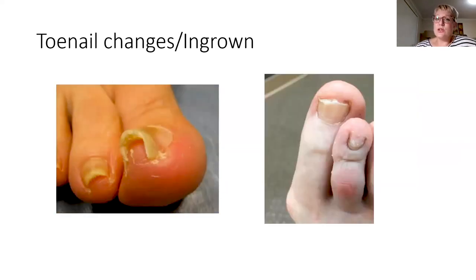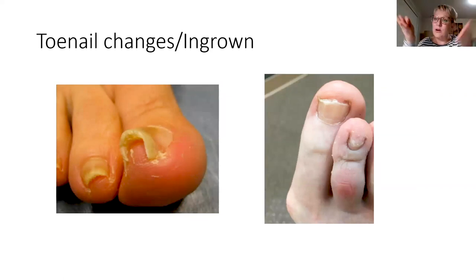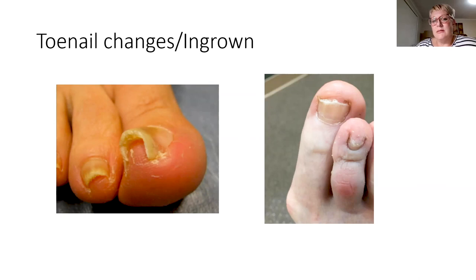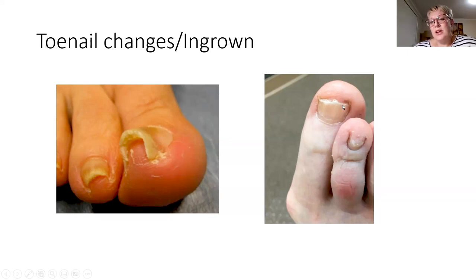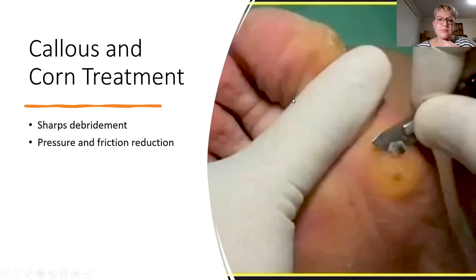Bunions can also cause toenail changes over time. With abnormal pressures going through other parts of the foot, you can get nail thickening, nails becoming meager or involuted, or ingrown nails. It's not just the big toe — pressure between the first and second toe can cause the inside of the second toenail to become ingrown as well. Overlapping of the second toe can also cause ingrown nails on the lateral side of that nail.